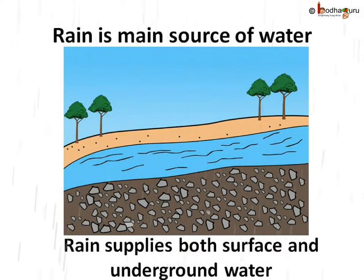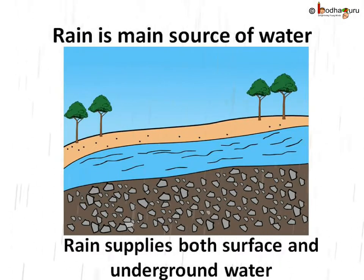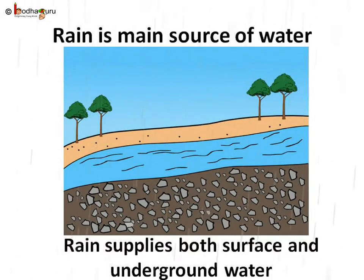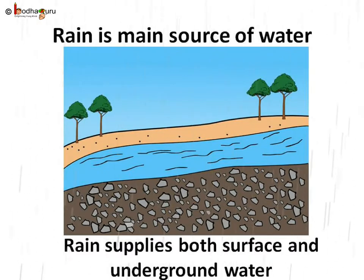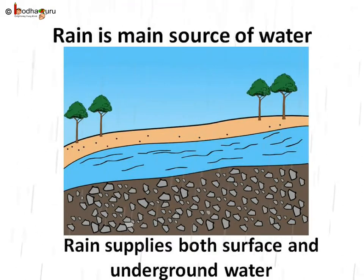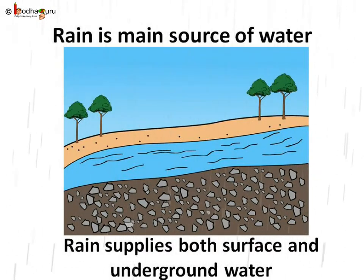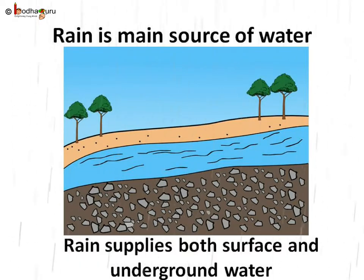Most lakes, rivers, and ponds which are sources of sweet surface water are filled with rainwater. Many rivers which provide people water for many purposes get water from rain. During the water cycle, water gets evaporated from seas too. Then that sea water comes down as sweet rain and fills the ponds, lakes, etc. So even unusable sea water comes to us as fresh water through rain.